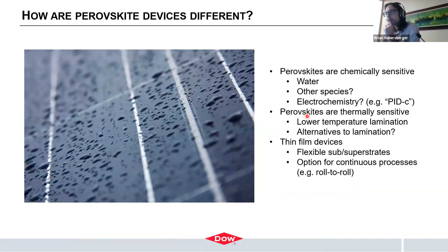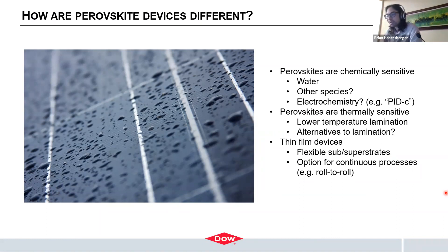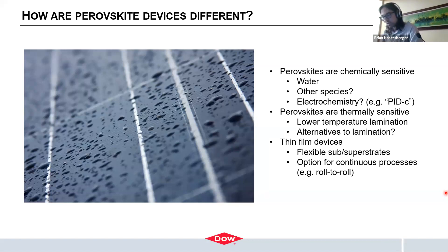Moving to the last part of the talk: how are perovskite devices different from what the industry is familiar with? I am not an expert here. The property I'm most familiar with is their chemical sensitivity — perovskites are very significantly more sensitive to water than conventional silicon devices. They may be sensitive to other species and there may be some electrochemistry associated with that sensitivity. There could be PID corrosion-type mechanisms similar to silicon devices. Perovskites are also thermally sensitive: the module assembly process generally goes up to 150°C, and if the device is not stable in that range, you might want a lower lamination temperature or a different process entirely.